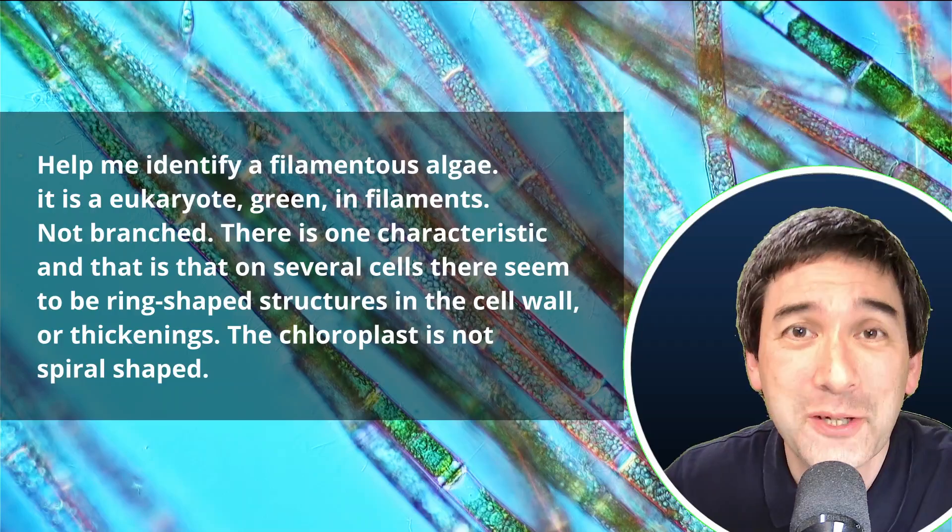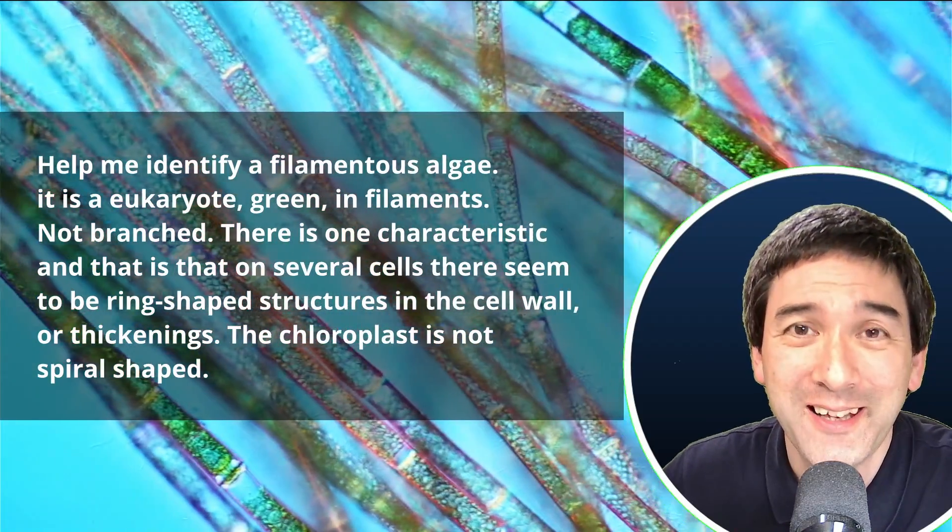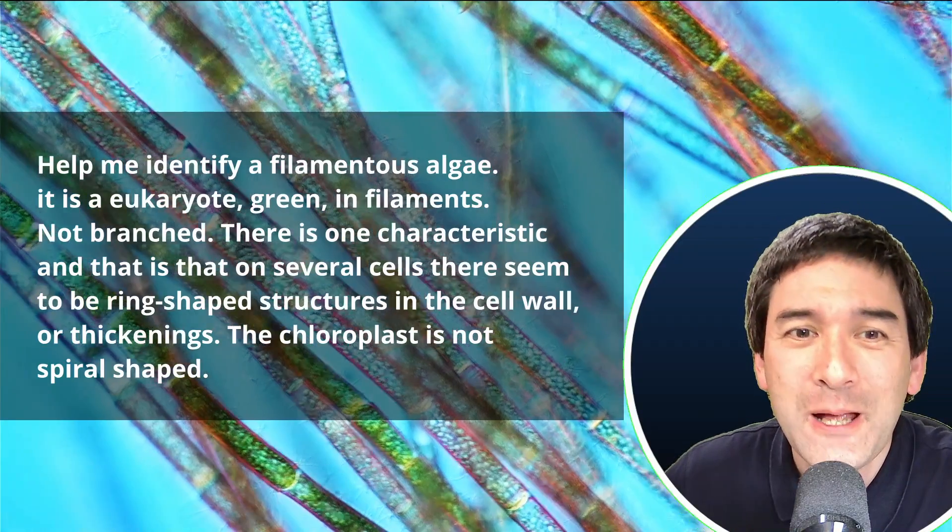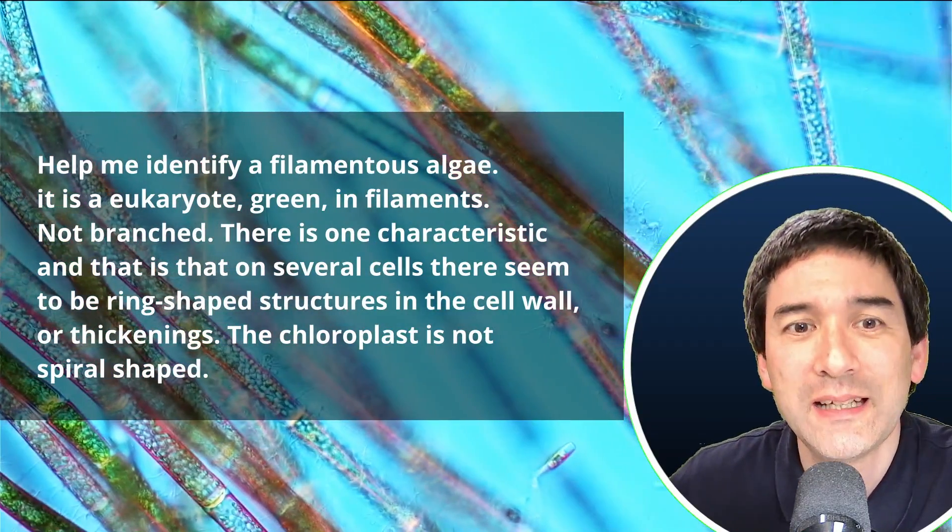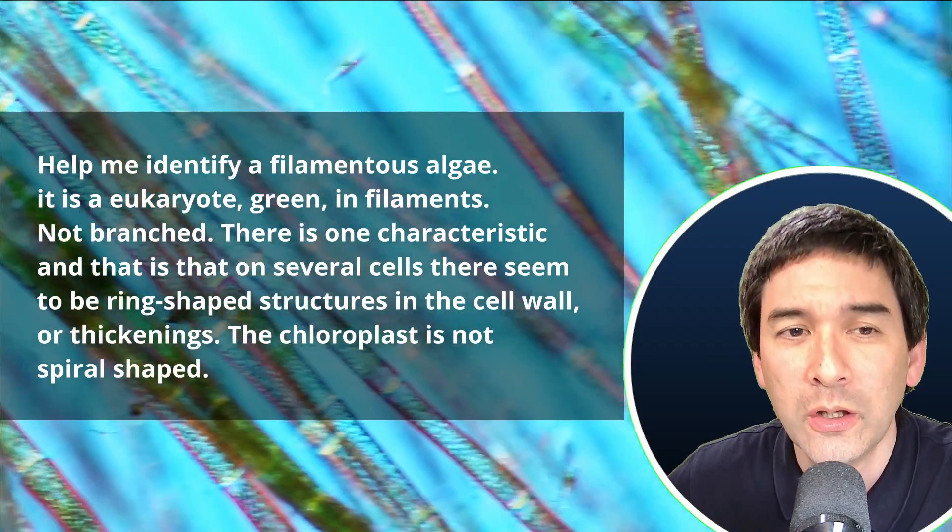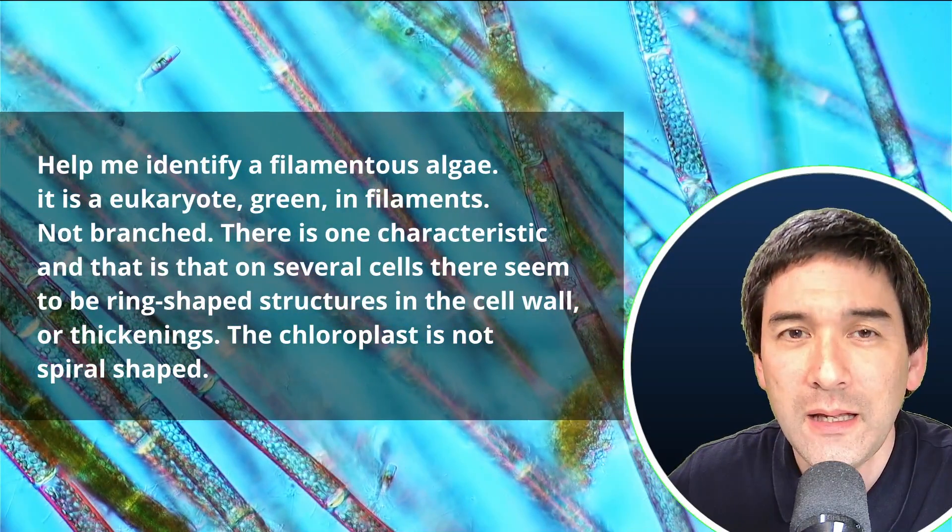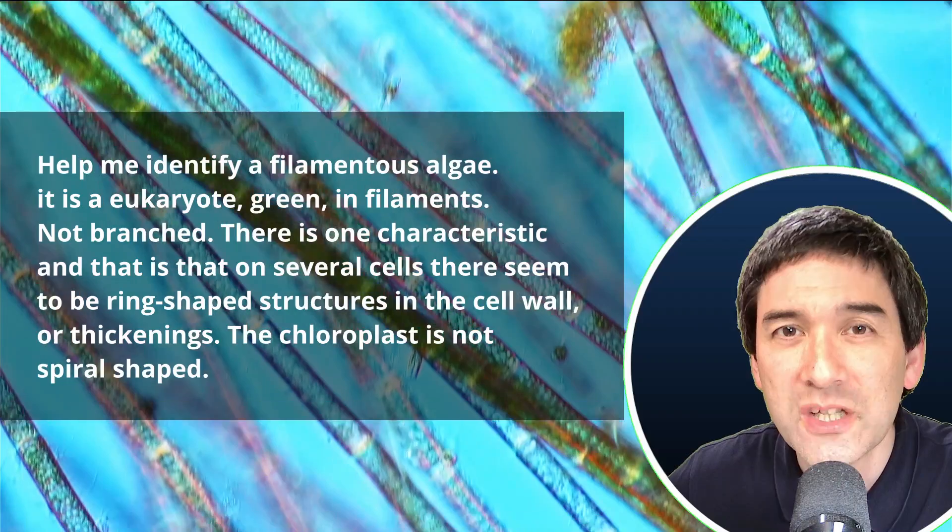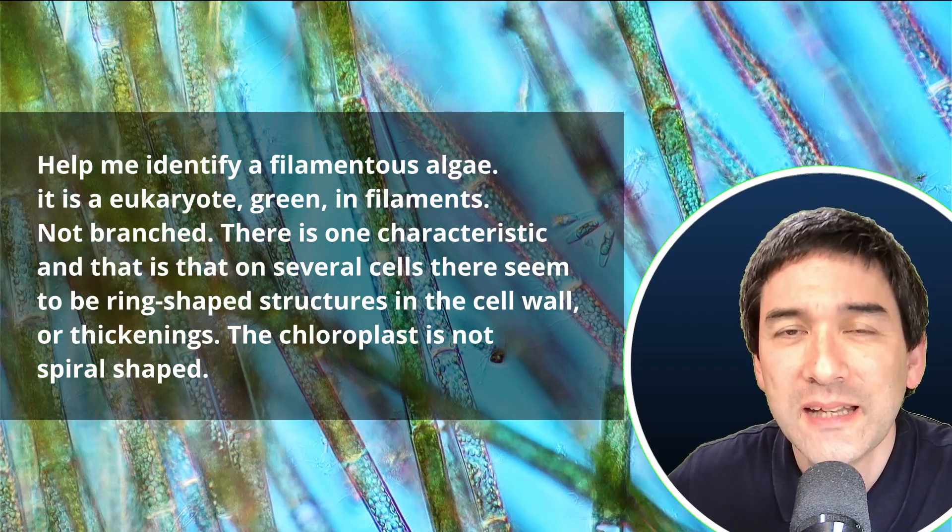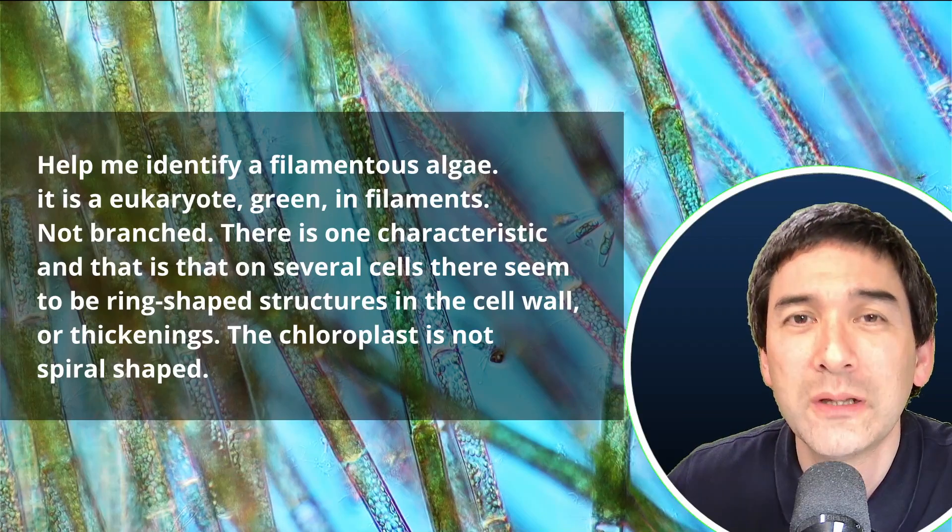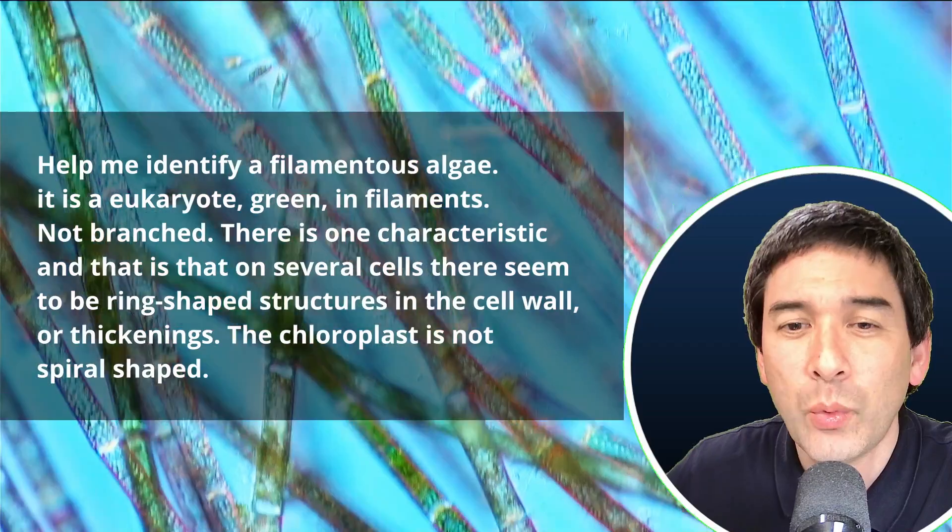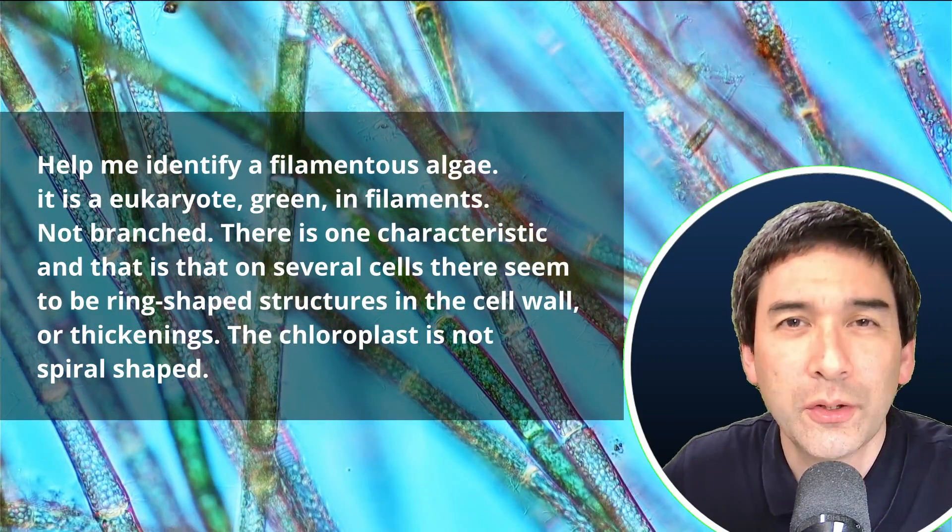It's not branched. This way I wanted to exclude of course any fungi. It's kind of a little bit redundant to say that it's not branched. It's clear that it's not a fungus. But there's one characteristic: in several cells there seems to be ring-shaped structures in the cell wall or thickenings. And I also wanted to exclude spirogyra. The chloroplast is not spiral-shaped. So this last sentence should limit the possibility here because spirogyra is indeed a very common algae. And I wanted to exclude that possibility right out of hand.